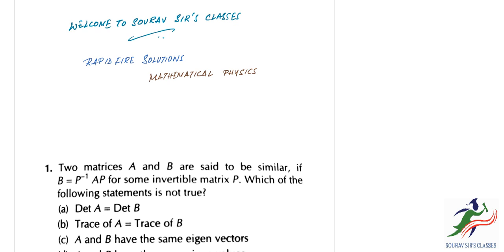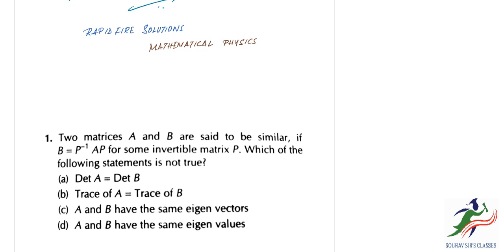First problem: two matrices A and B are said to be similar if B is equal to P inverse AP for some invertible matrix P. We are given these statements and are required to find the statement which is false.